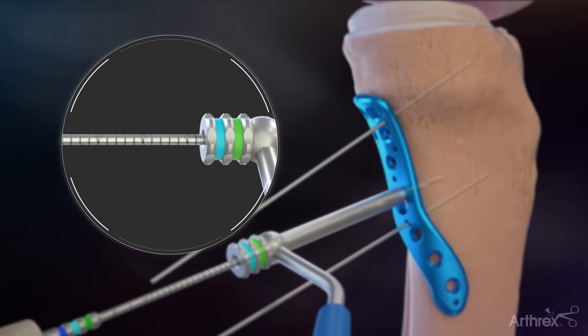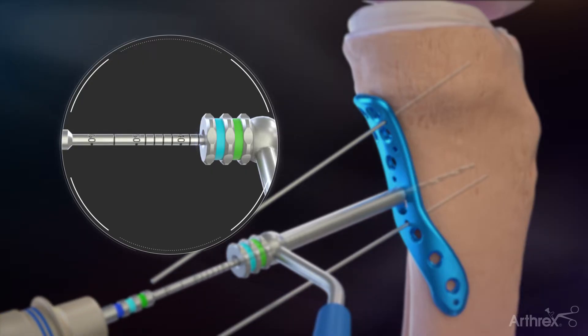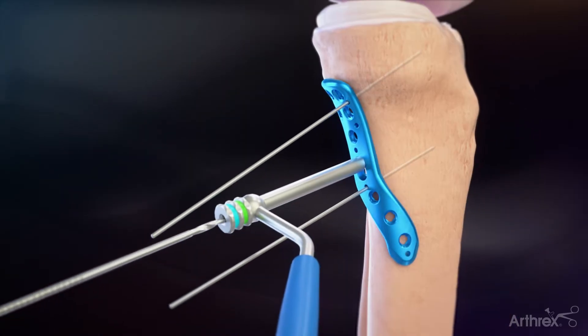Drill through the guide with the 2.8 mm drill bit and use the calibrations to determine the screw length. A hook tip depth gauge can also be used.